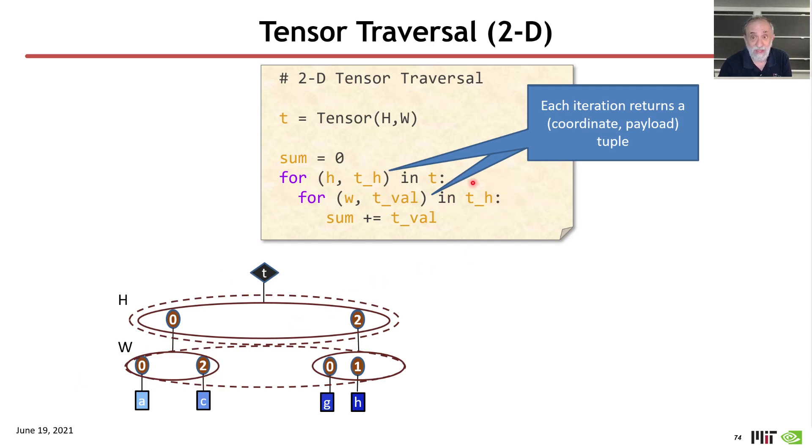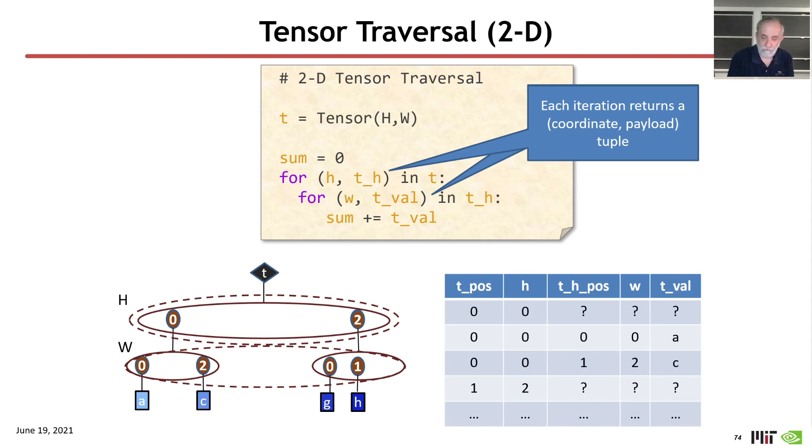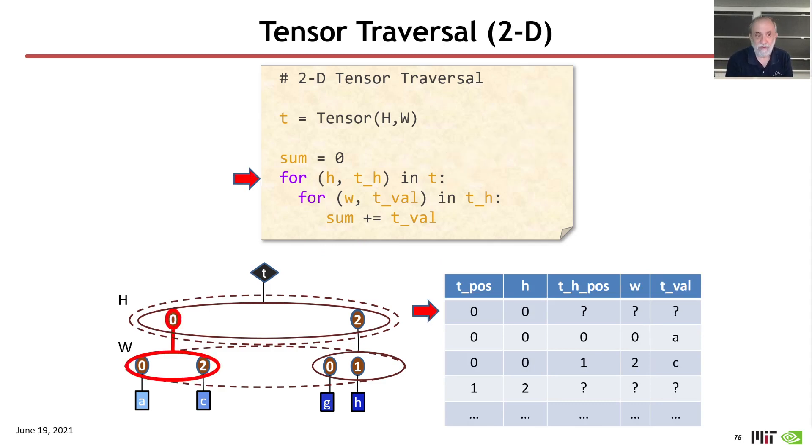And so therefore, in my next iteration, sorry, in my next for loop, I can traverse that fiber, returning a W coordinate, so a small letter corresponding to the name of the rank, and a value. And so if I just want to sum together all the elements of the rank two tensor, I can just get those T valves and add them into sum.